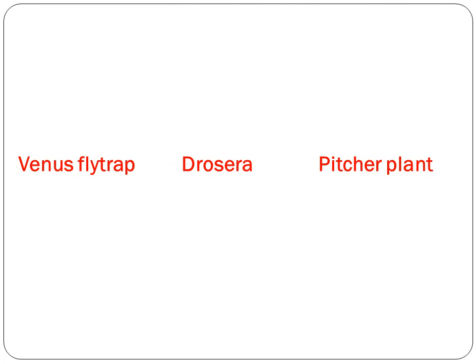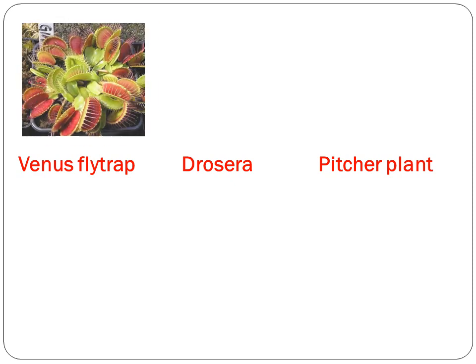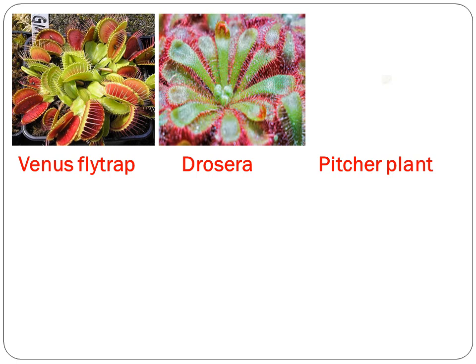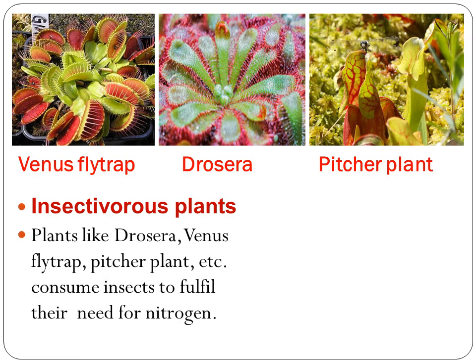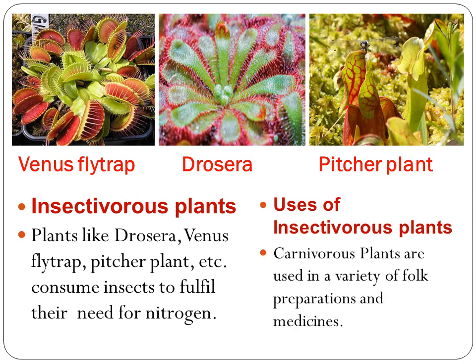Plants need nitrogen, phosphorus, and potassium for growth. Plants that grow in soil deficient in nitrogen — like Venus flytrap, Drosera, and pitcher plant — are insectivorous plants. These plants consume insects to fulfill their need for nitrogen. Uses of insectivorous plants: carnivorous plants are used in a variety of folk preparations and medicines.